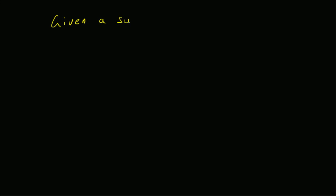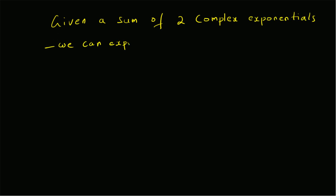That is, given a sum of two complex exponentials, we can express it as a single complex exponential multiplied by a real sinusoid.